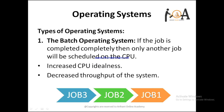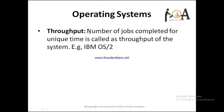Throughput is an important term frequently asked in vocabulary-type questions — it means the number of jobs completed in a unit time. In a batch operating system, since job 2 cannot start until job 1 completes, throughput is decreased. IBM OS/2 is a type of batch operating system.